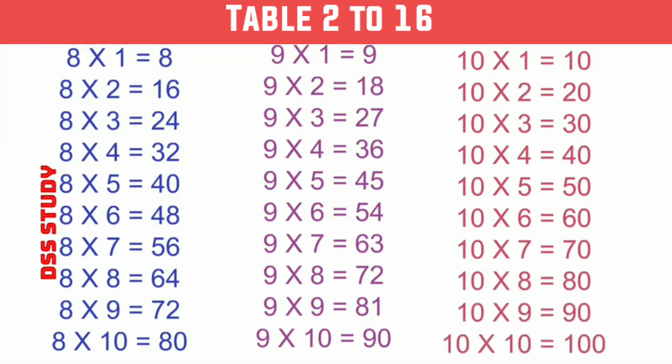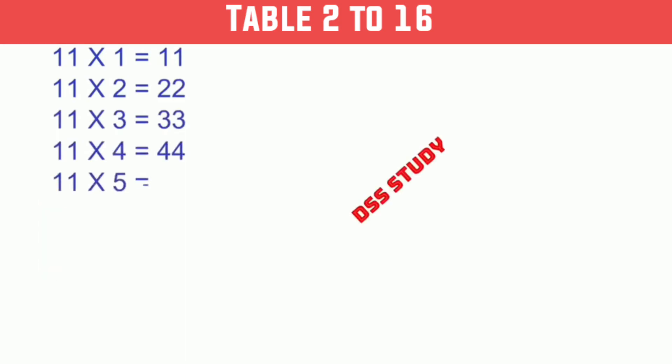11 times 1 is 11, 11 times 2 is 22, 11 times 3 is 33, 11 times 4 is 44, 11 times 5 is 55, 11 times 6 is 66, 11 times 7 is 77, 11 times 8 is 88, 11 times 9 is 99, 11 times 10 is 110.